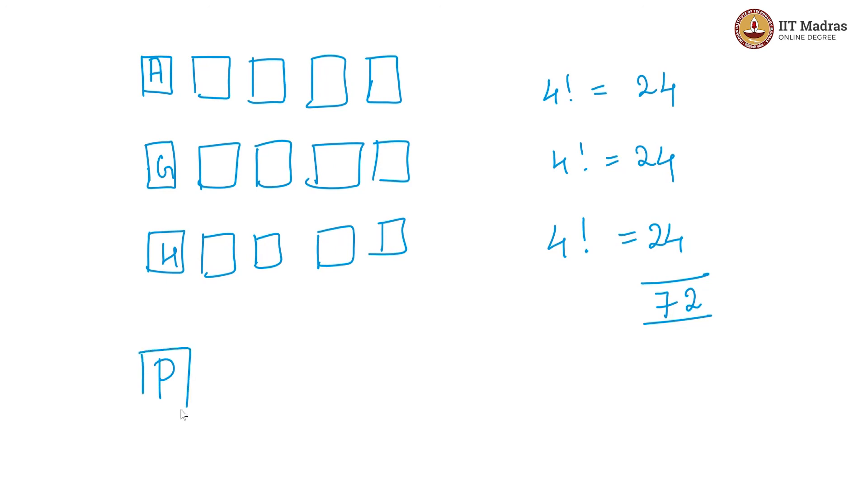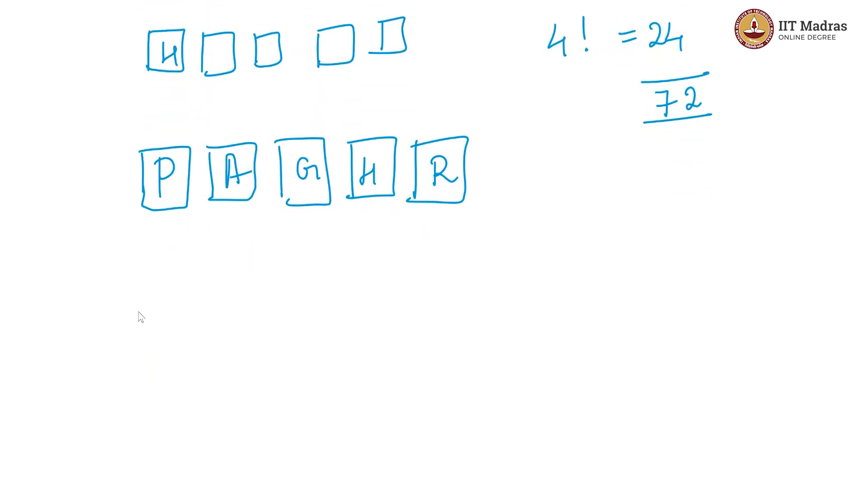So the first letter has to be P because after A and G and H comes P. And then the remaining we have to place in alphabetical order. So what are the remaining here? You will have A, this will be G, this is H and this is R. So the permutation number 73 is P, A, G, H, R.